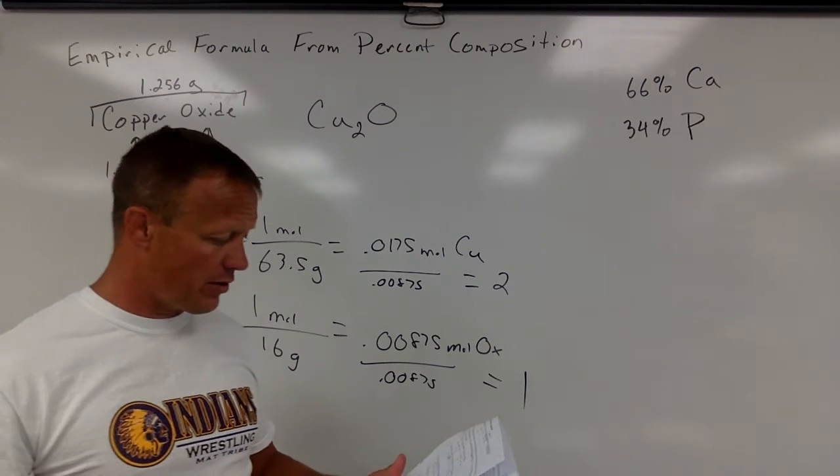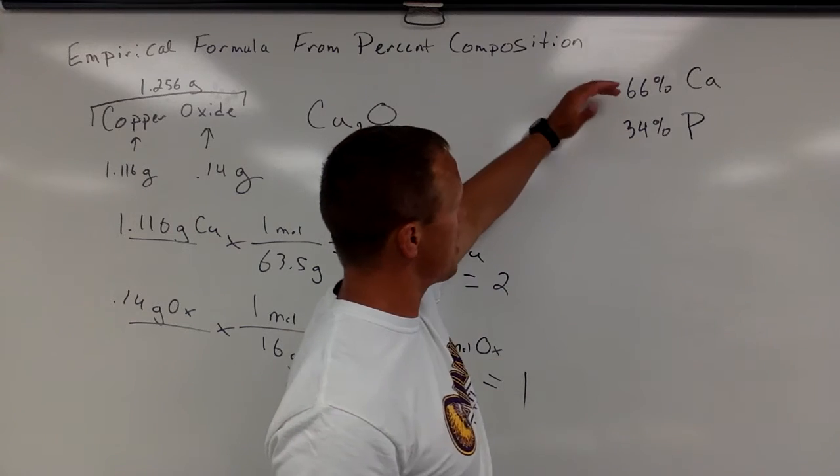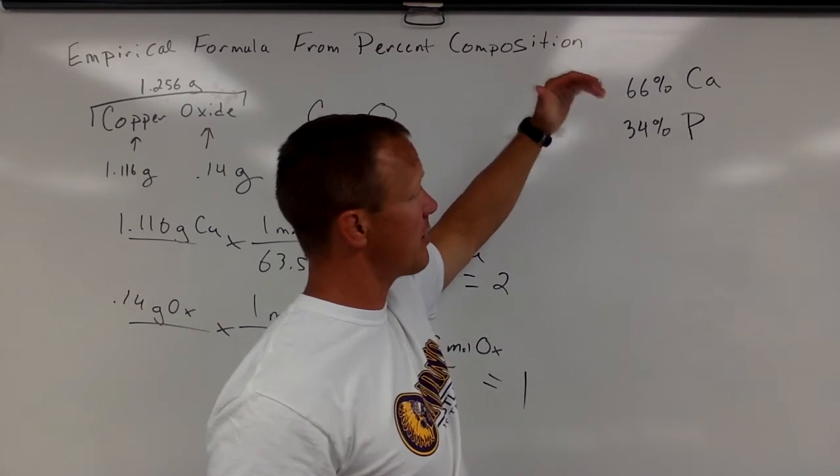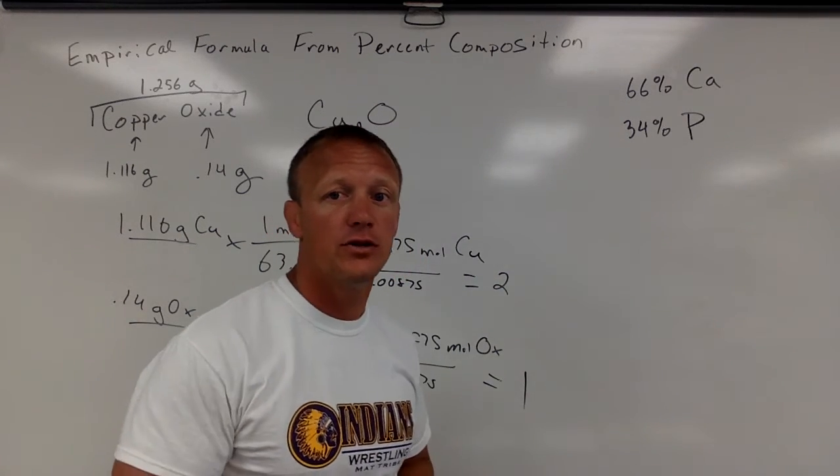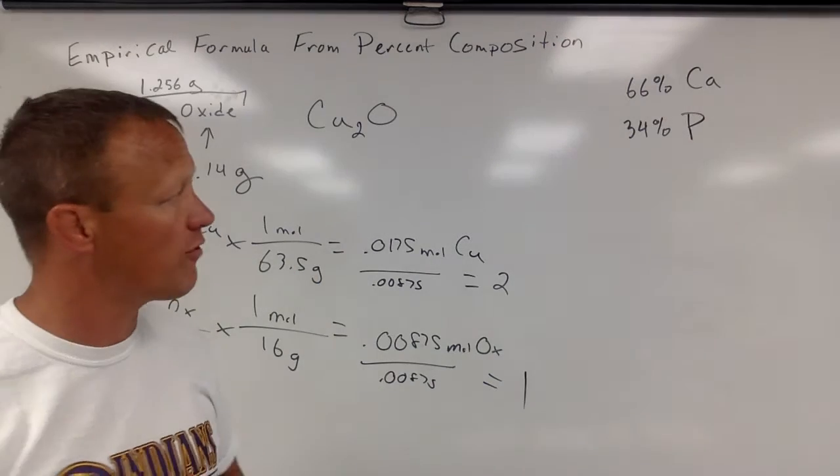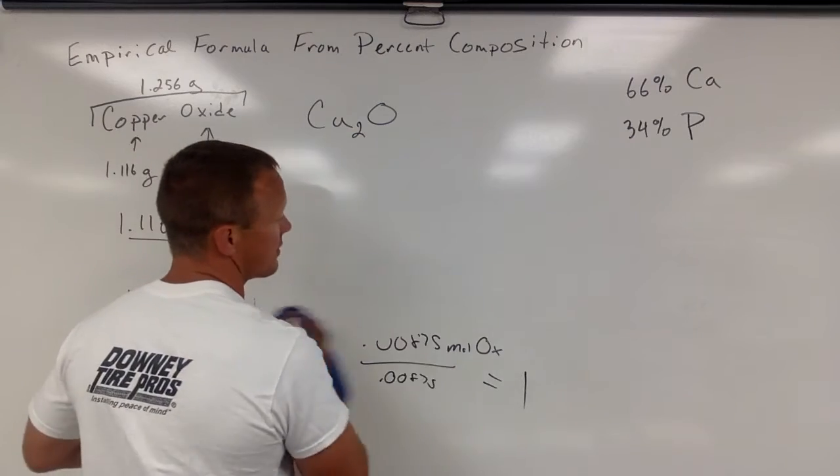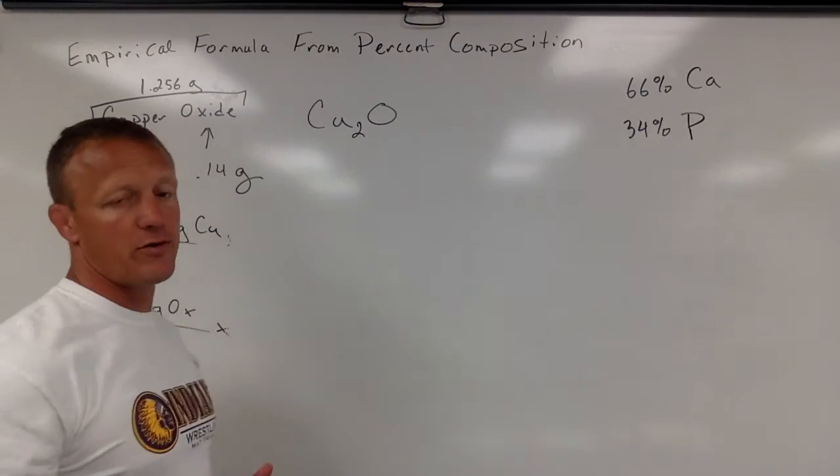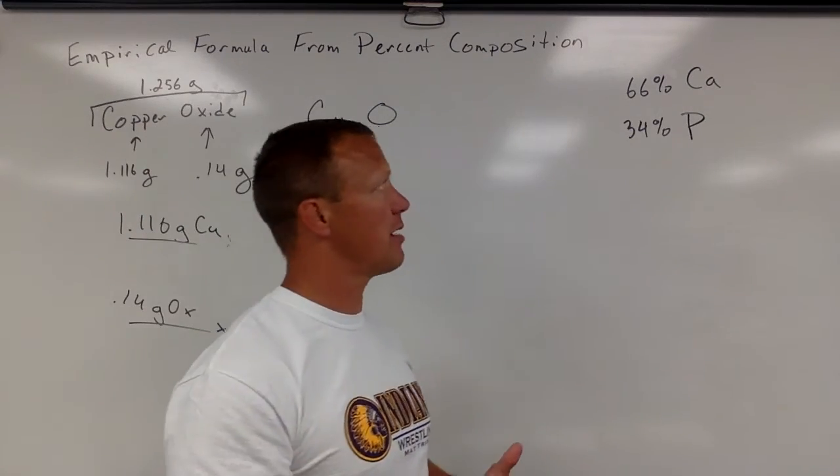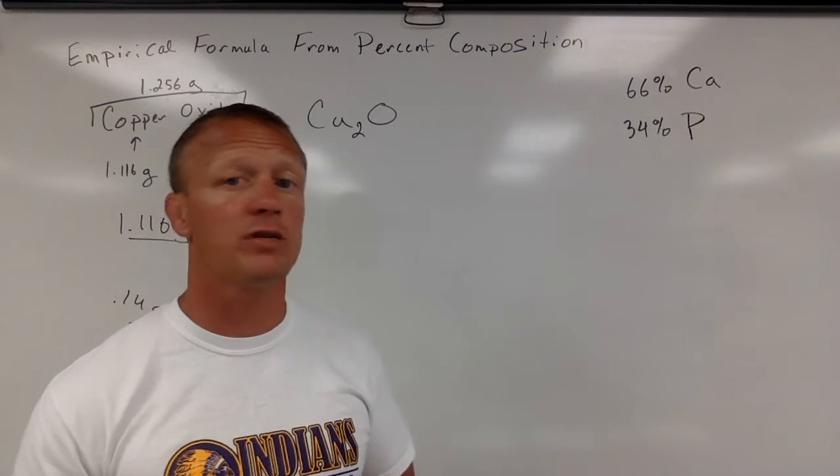The second problem there, letter B, says you have a compound of 66% calcium, 34% phosphorus. You guys can probably get the formula of that since you know how to write formulas. But let's say we don't know what the formula is. So now we have percents. Remember, we can pretend like we have a 100-gram sample of a compound.